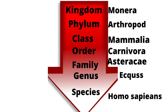Here are the examples. Kingdom: Monera. Phylum: Arthropoda. Class: Mammalia. Order: Carnivora. Family: Asteraceae. Genus: Equus. Species: Homo sapiens.